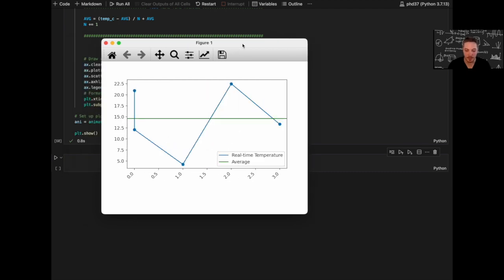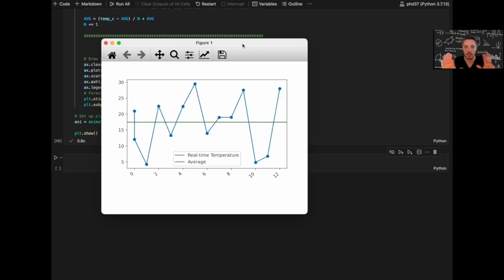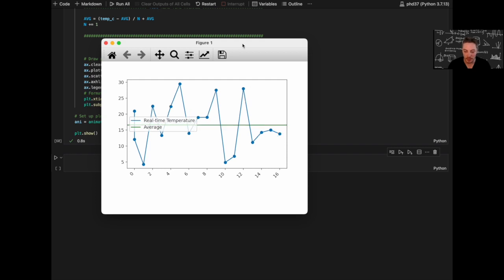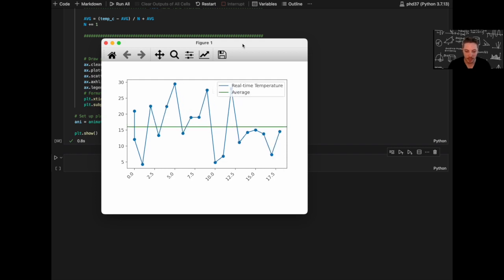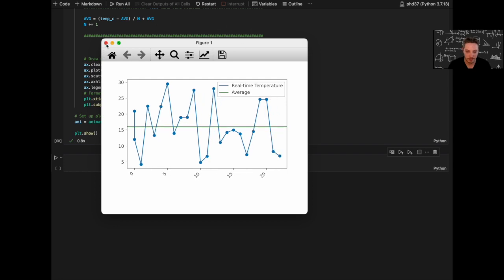Again, the blue line is the real-time temperature data that keeps coming. The green line is the average of the whole set of temperatures. And as you can see, it's updating in real time. Awesome.